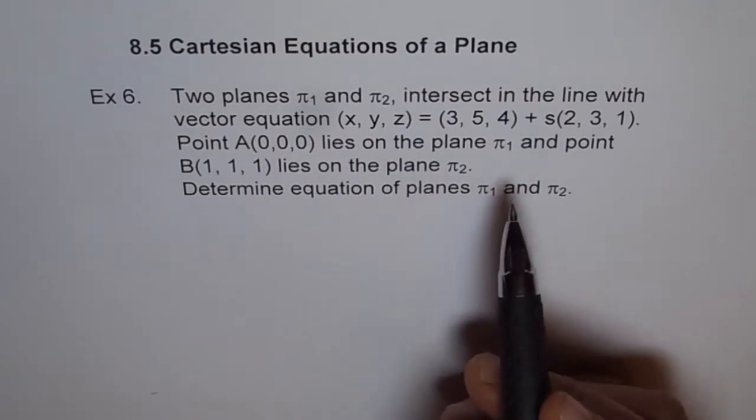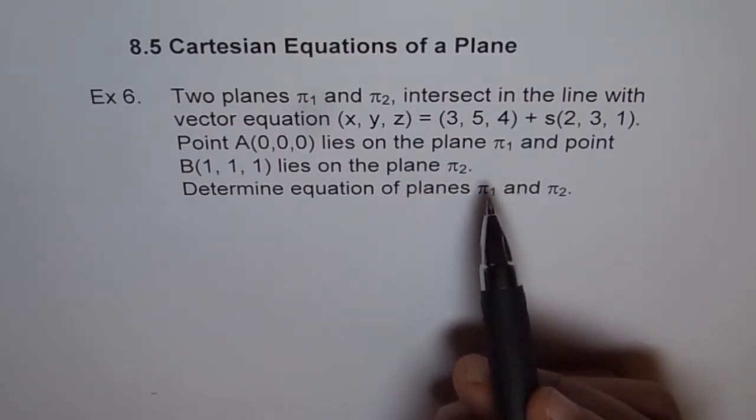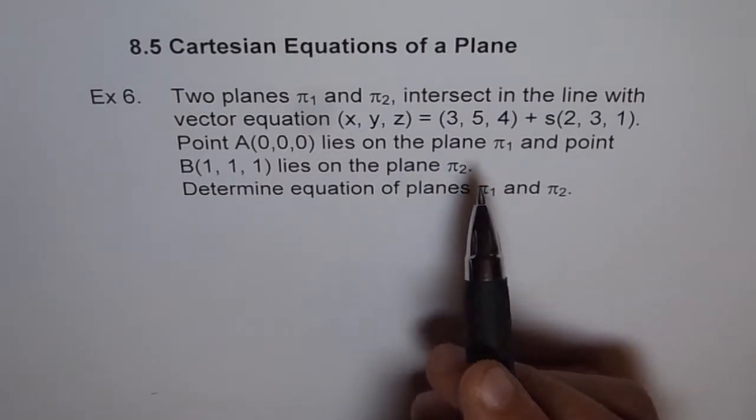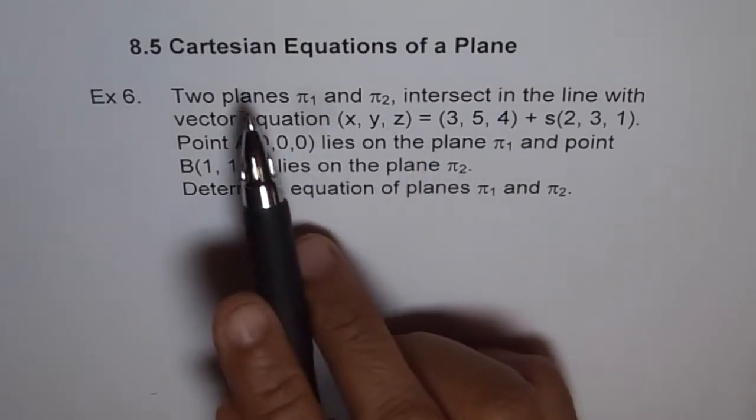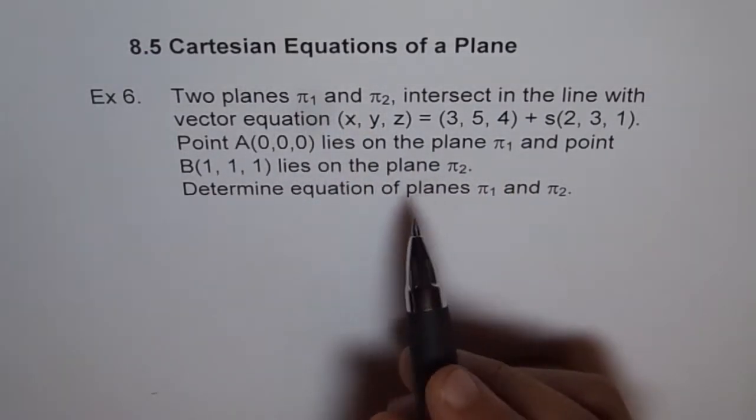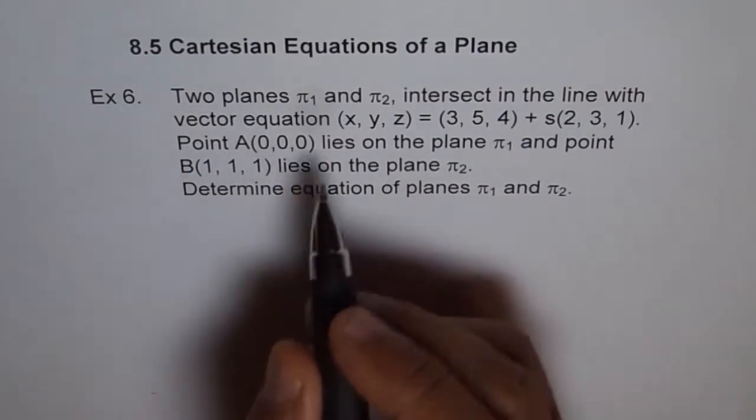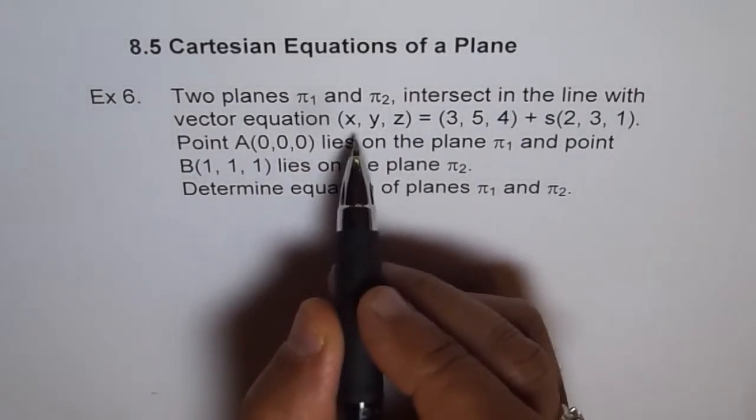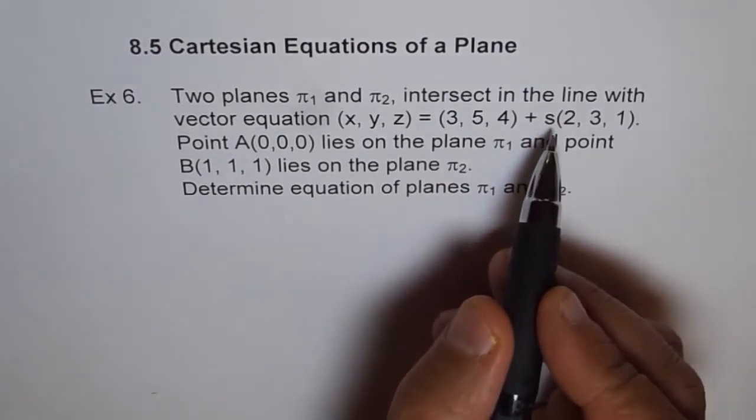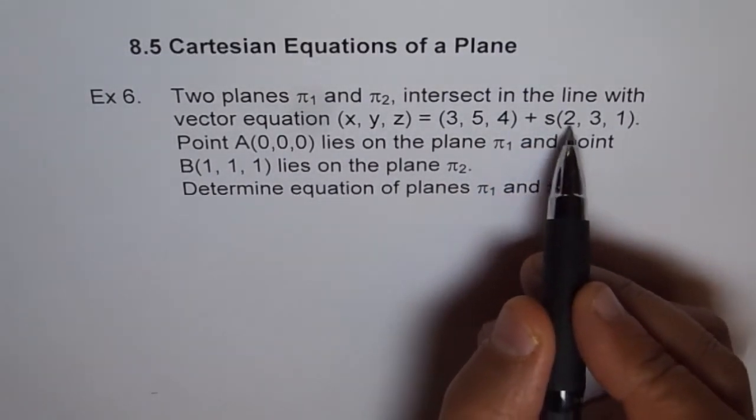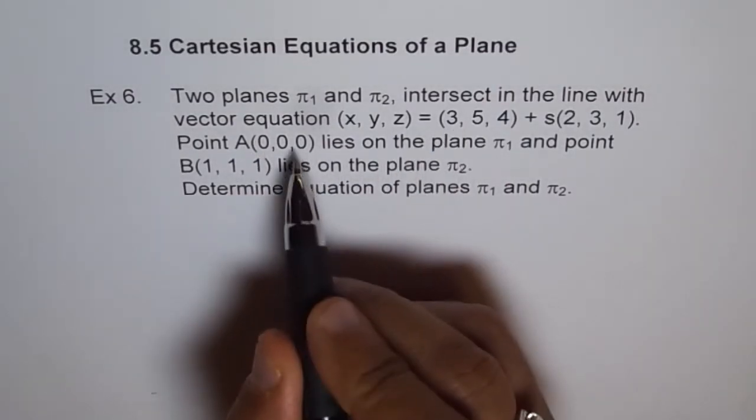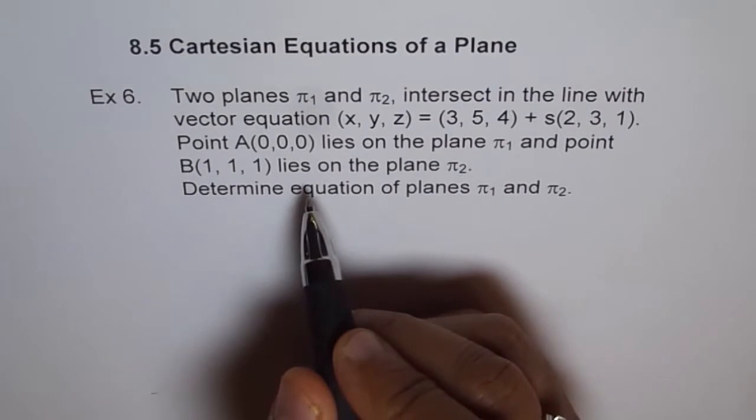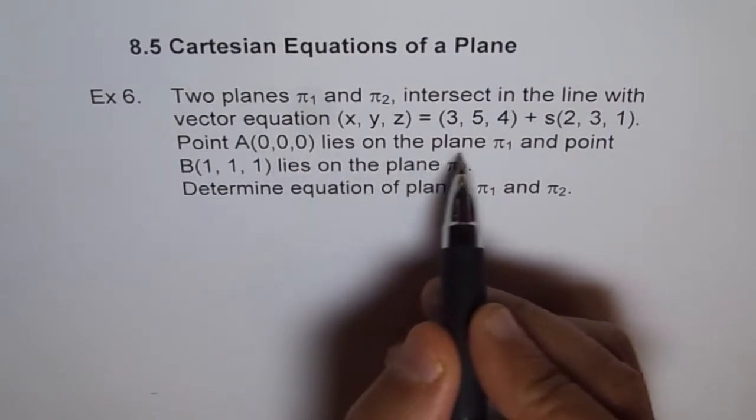We could write vector equation or scalar equation of the plane. We will write vector equation for one plane and the scalar Cartesian equation for the other. For the first plane, we know one of the direction vectors is (2,3,4). The other could be from point A.